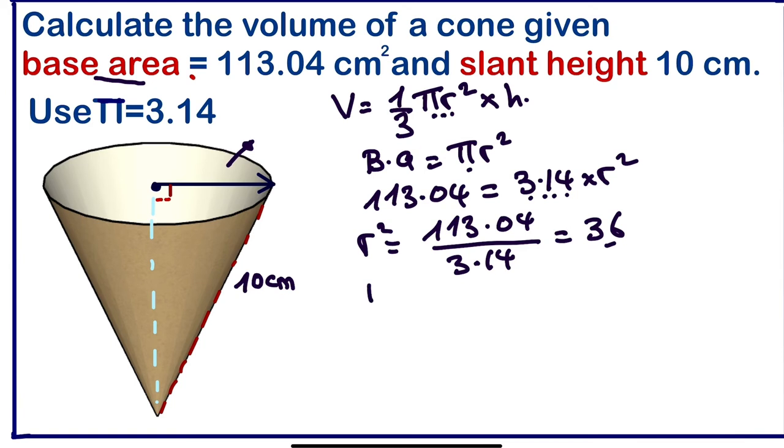If r² is 36, this implies r equals 6. So we can write 6 here for the radius. If we use Pythagorean theorem, this implies the height of this cone is going to be 8 centimeters.